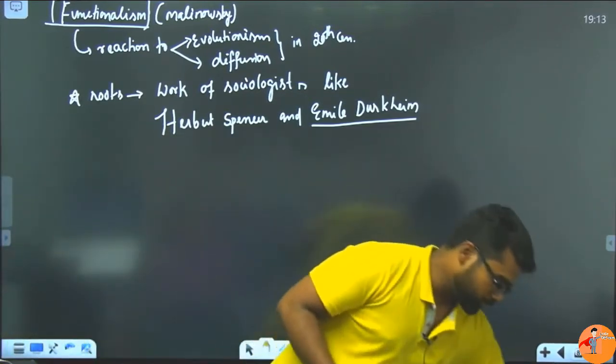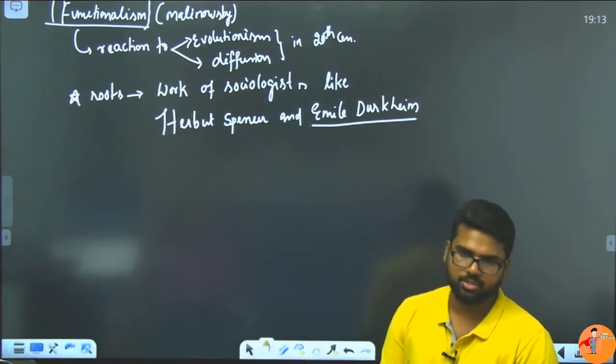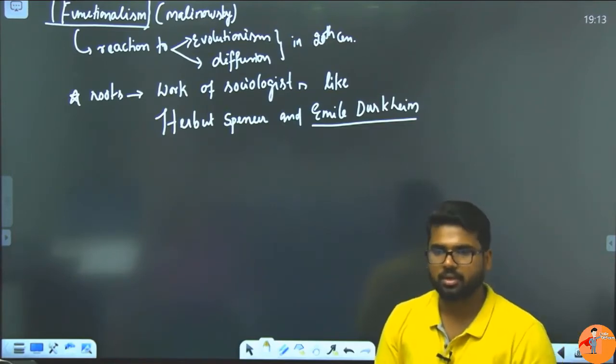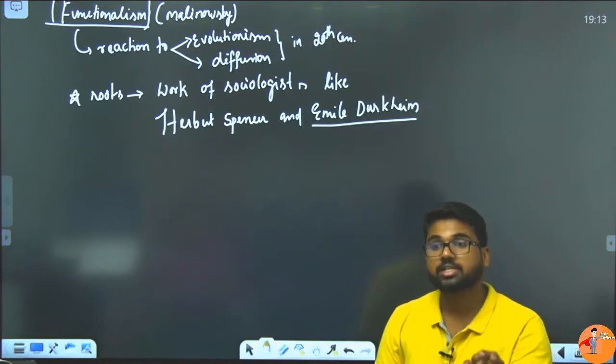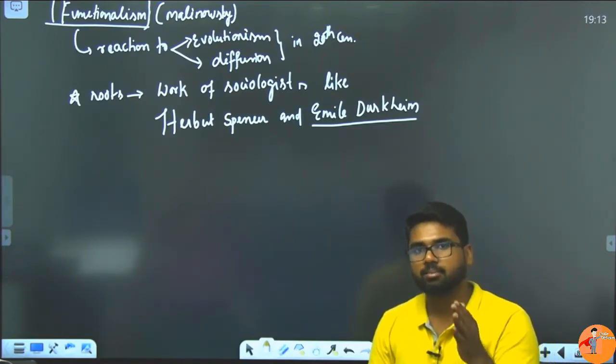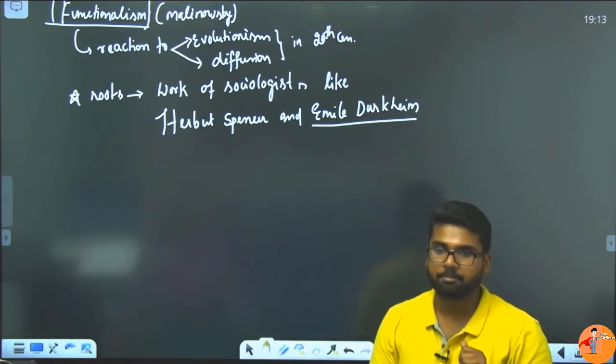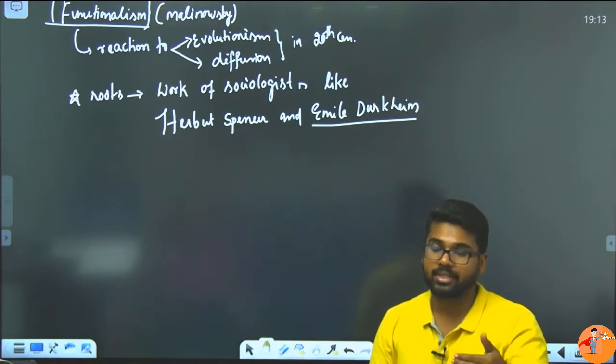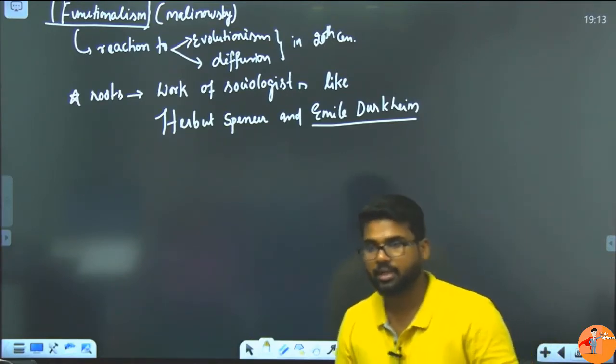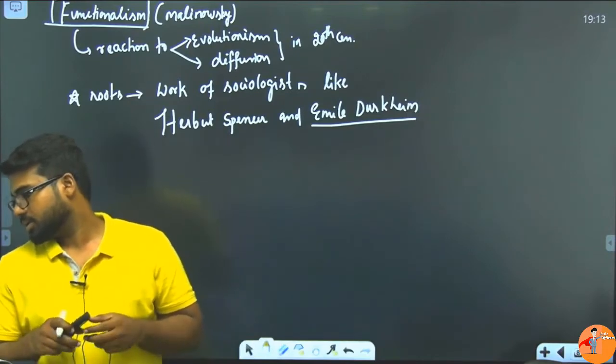See, when the name came, just like evolutionist came, you understood by name that evolution, progressive change. Diffusionism, how spread happens. Historical particularism, focus on historical evidences. Similarly, functionalism indicates the functions of the culture. The motive of functionalism school of thought is to know the functional aspect of culture.